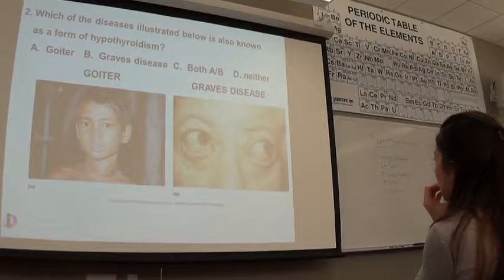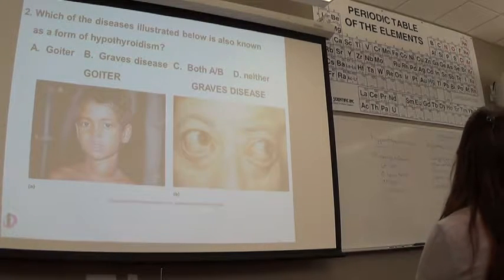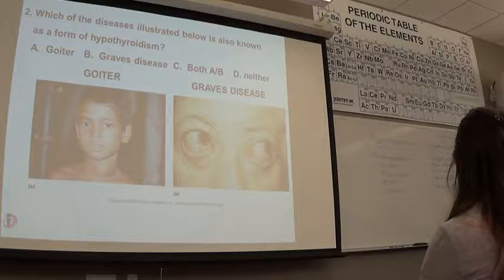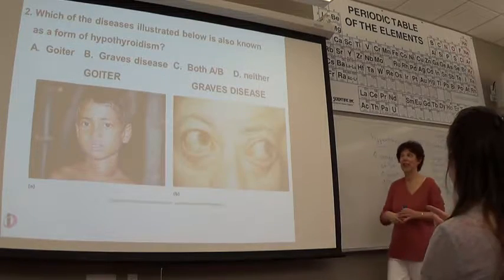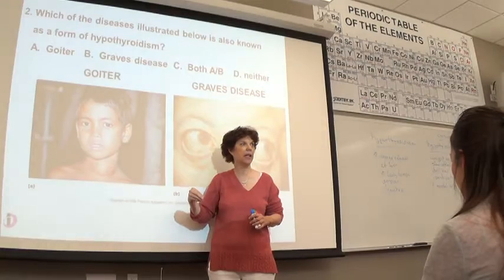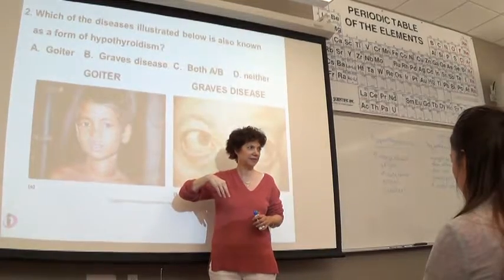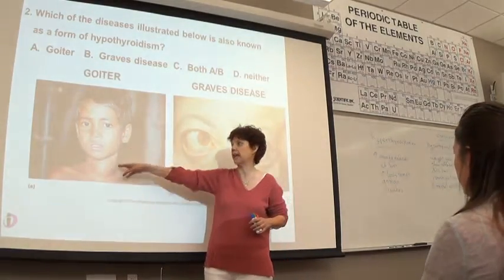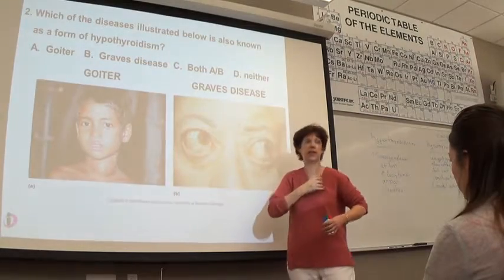So the child on the left has a goiter. And we talked about this yesterday. Would this individual have elevated TSH, TRH, or low TRH and TSH? So are they producing a lot of thyroglobulin? Yes. But it's inactive without the iodine attached to it. And so the hypothalamus perceives that as low levels of thyroid and increases TRH. So the anterior pituitary increases TSH and that's what causes the goiter. That's what causes the hyperplasia, either increase in the size of the cells or increase in the number of the cells.